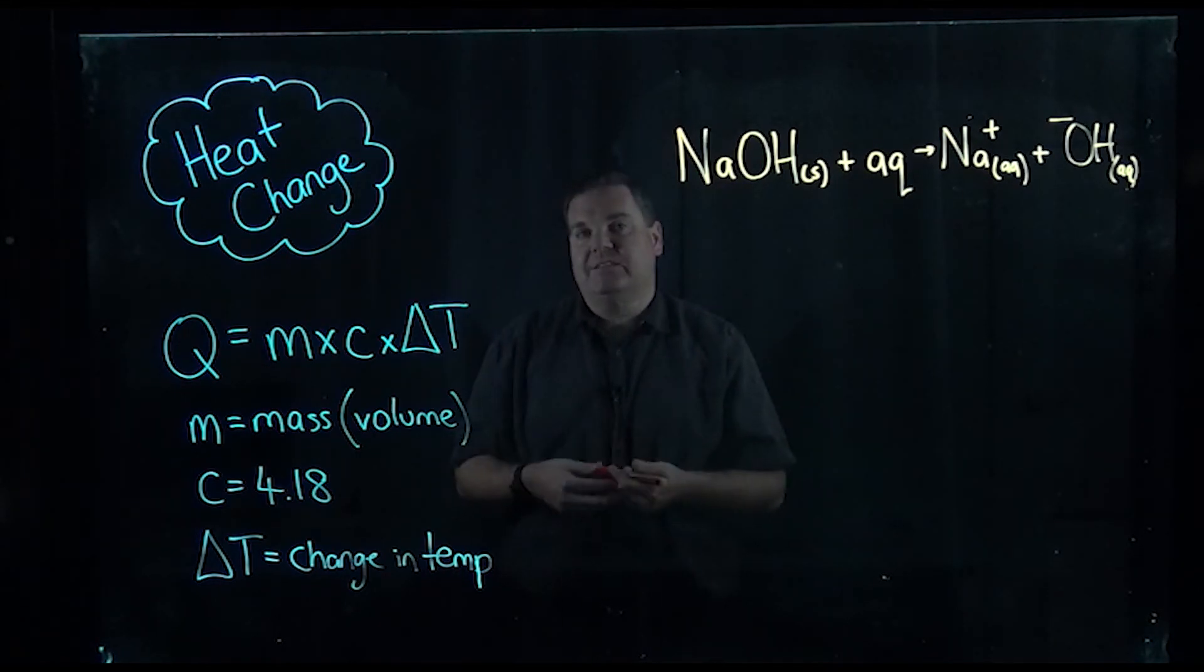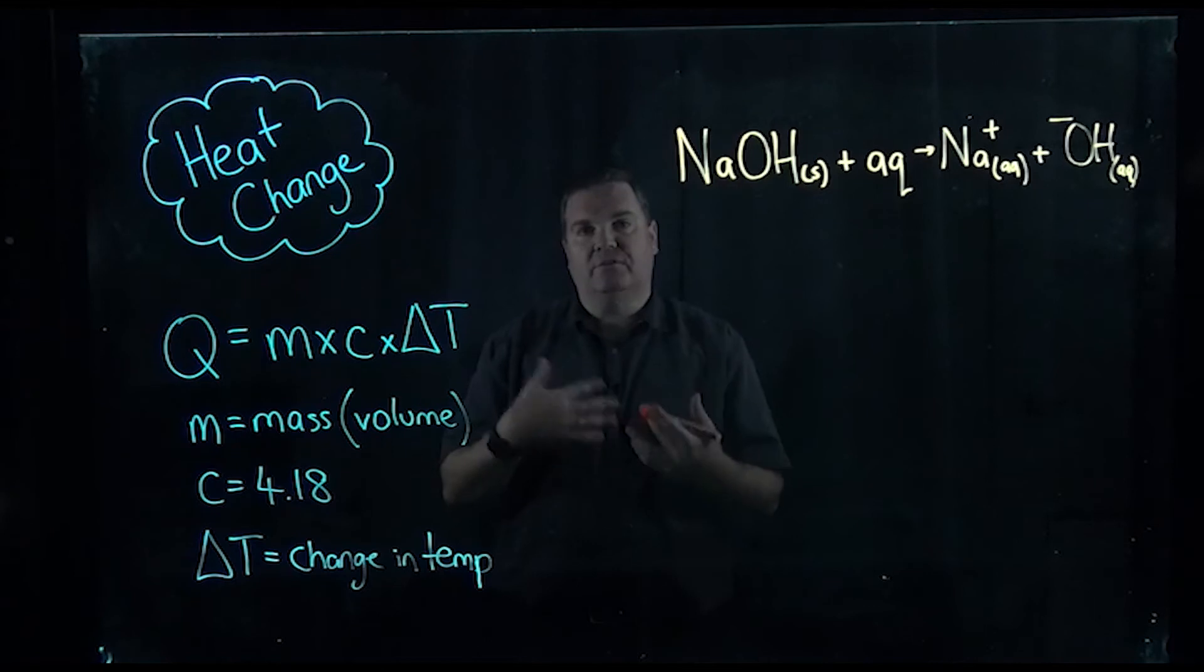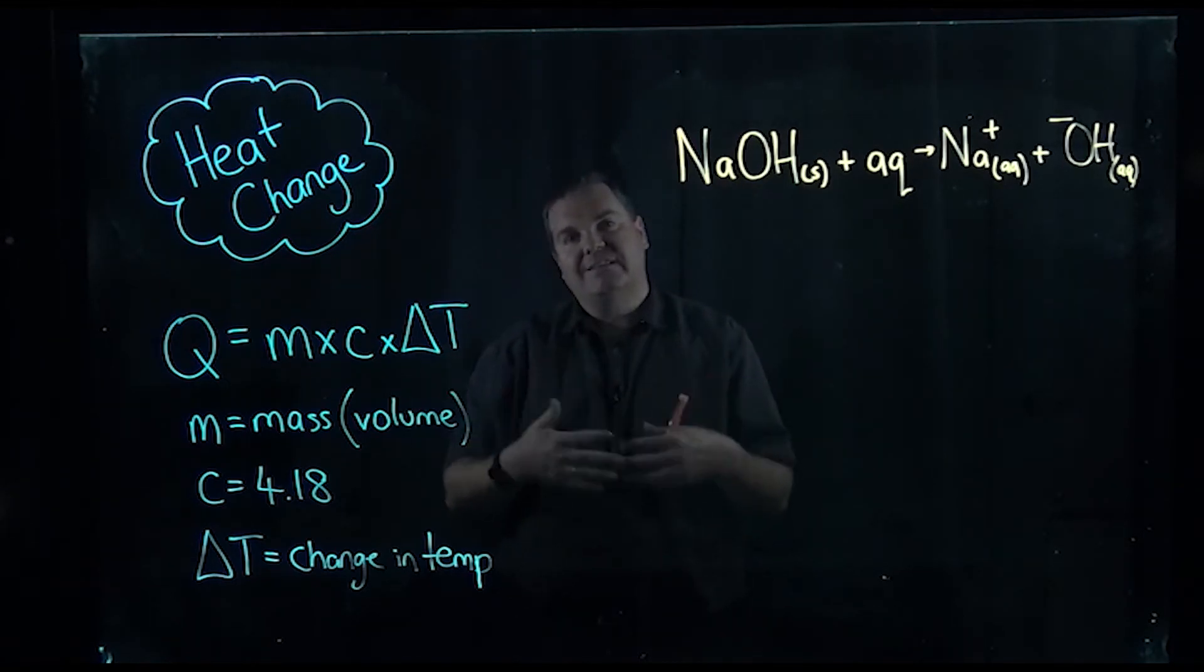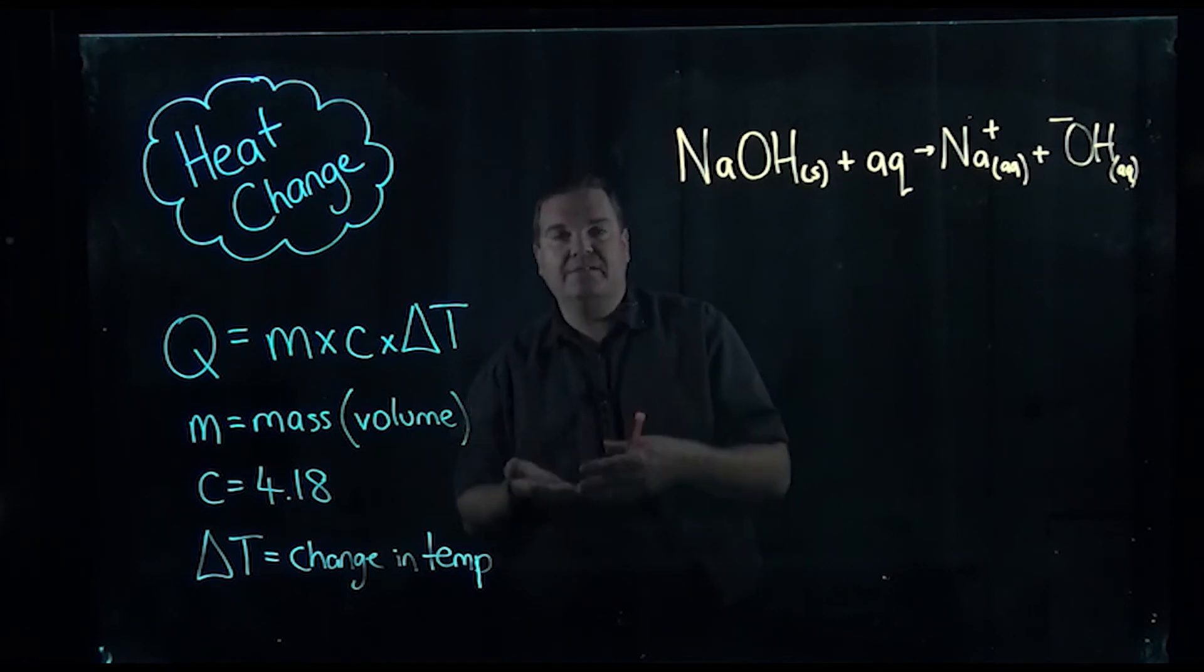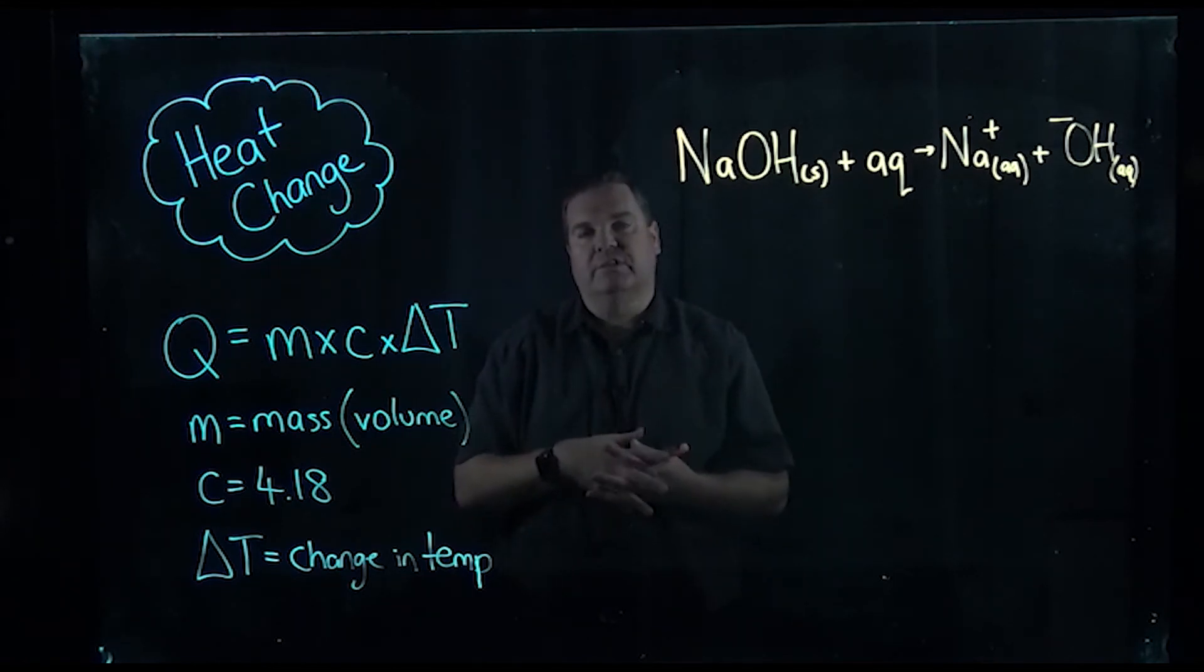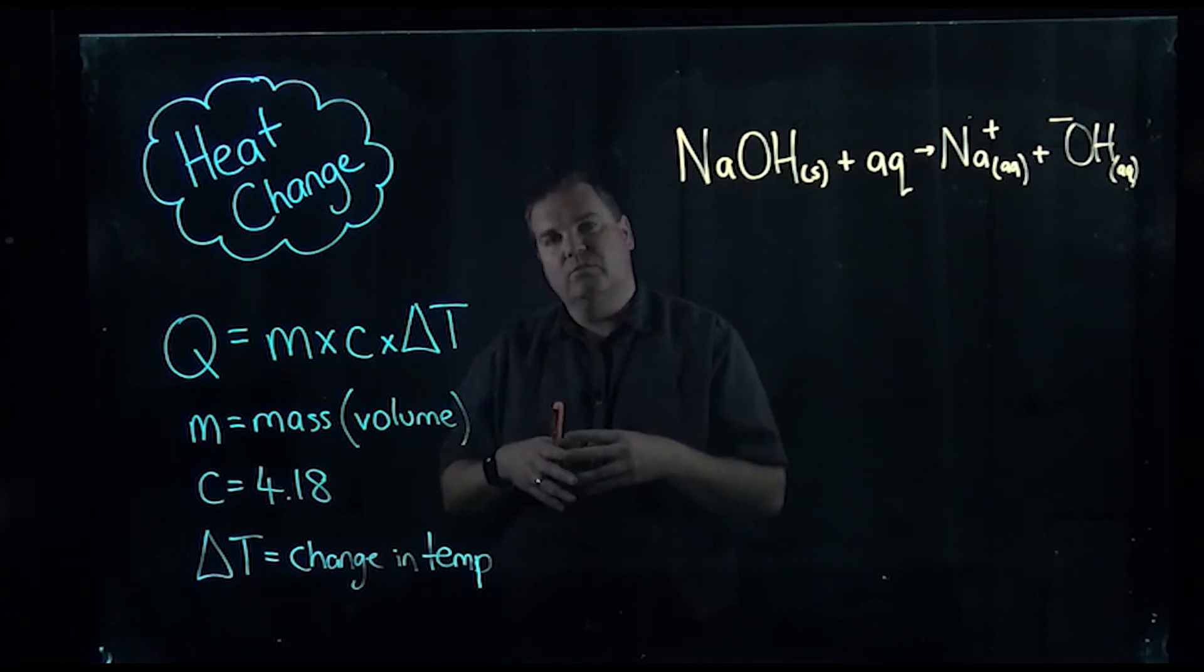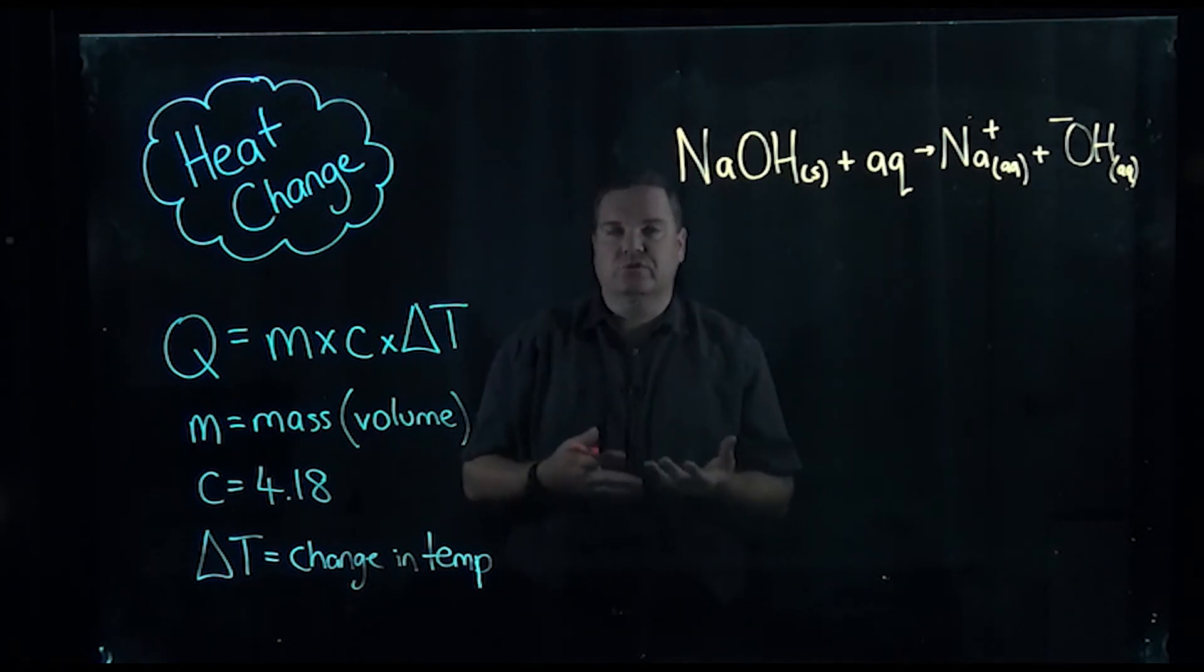What we use is m. Now m is for mass, but generally for these reactions because we're dissolving it in water, we're assuming that the density is one gram per milliliter. So what we've got is we're assuming that the density is one, so the mass of the water is the same as the volume of the water. So if we've got 200 milliliters of water, we're assuming that the mass is also 200 grams.